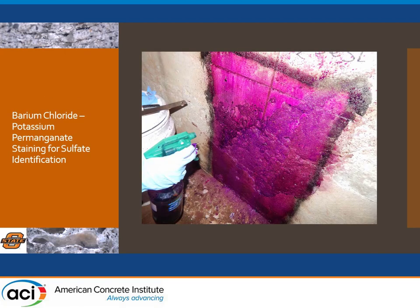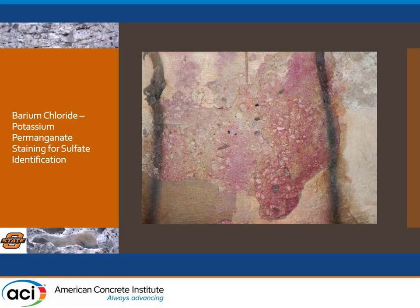One of the things we decided to try was a staining test with barium chloride and potassium permanganate to identify on-site if we were actually looking at sulfate salts. You spray barium chloride and potassium permanganate — it really stains, so ask permission from your client because you cannot remove the purple color once it is in place. We stained the structure and then washed it down. Any remaining purple is essentially barium sulfate, an insoluble salt. The areas that were initially white are now stained purple, indicating that sulfate compounds were present on the surface of the concrete.